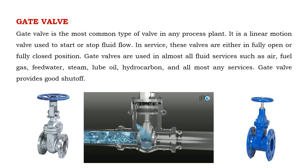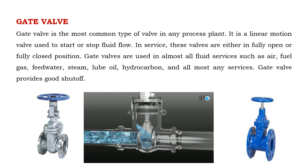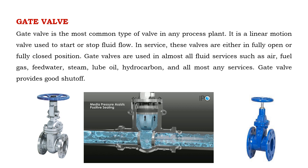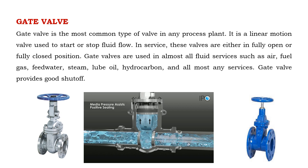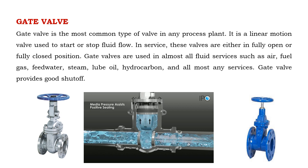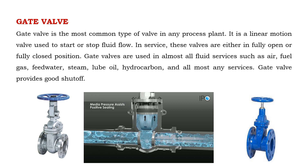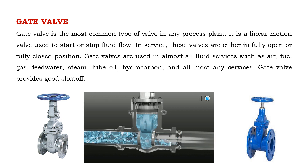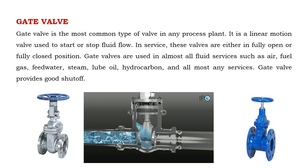Gate valve is the most common type of valve in any process plant. It is a linear motion valve used to start or stop fluid flow. In service, these valves are either in fully open or fully closed position. Gate valves are used in almost all fluid services such as air, fuel gas, feed water, steam, lube oil, hydrocarbon, and almost any service. Gate valve provides good shut off.